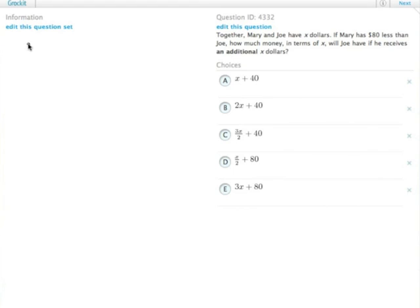This question is a straightforward translation of words into algebra. We know that Mary and Joe together have X dollars. We also know that Mary has $80 less than Joe.